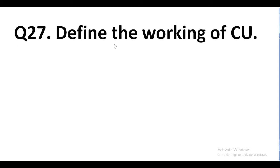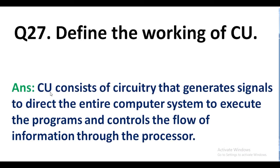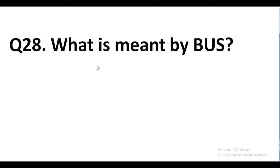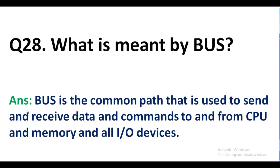Question number 27. Define the working of CU. Answer. CU consists of circuitry that generates signals to direct the entire computer system to execute programs and controls the flow of information through the processor. Question number 28. What is meant by BUS? Answer. BUS is the common path that is used to send and receive data and commands to and from the CPU, memory, and all input/output devices.